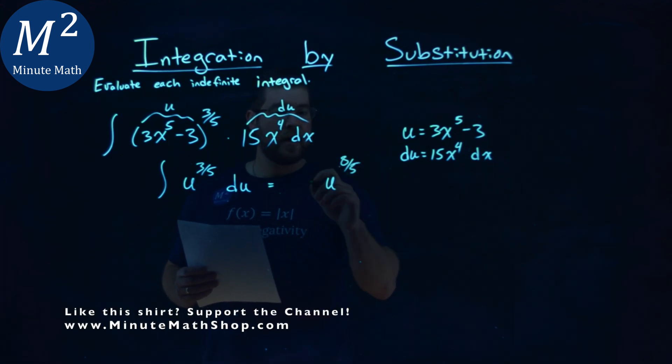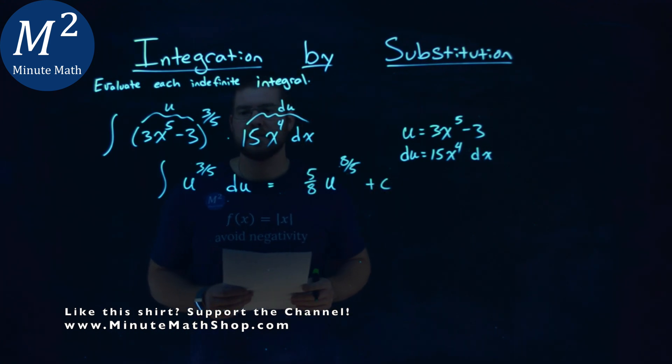To counteract that, multiply it by 5 8ths out front, and then we have a plus c.